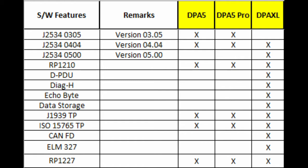Of course we mentioned CAN-FD in the hardware comparison chart. The DPAXL is also ELM-327 capable, so if you have a phone app that uses ELM-327 you're going to be able to talk to the DPAXL. That also goes for RP-1227 with mobile apps, and many of our customers use this DPAXL tool to run their J1699 and J1939 tests as shown in the last two lines.